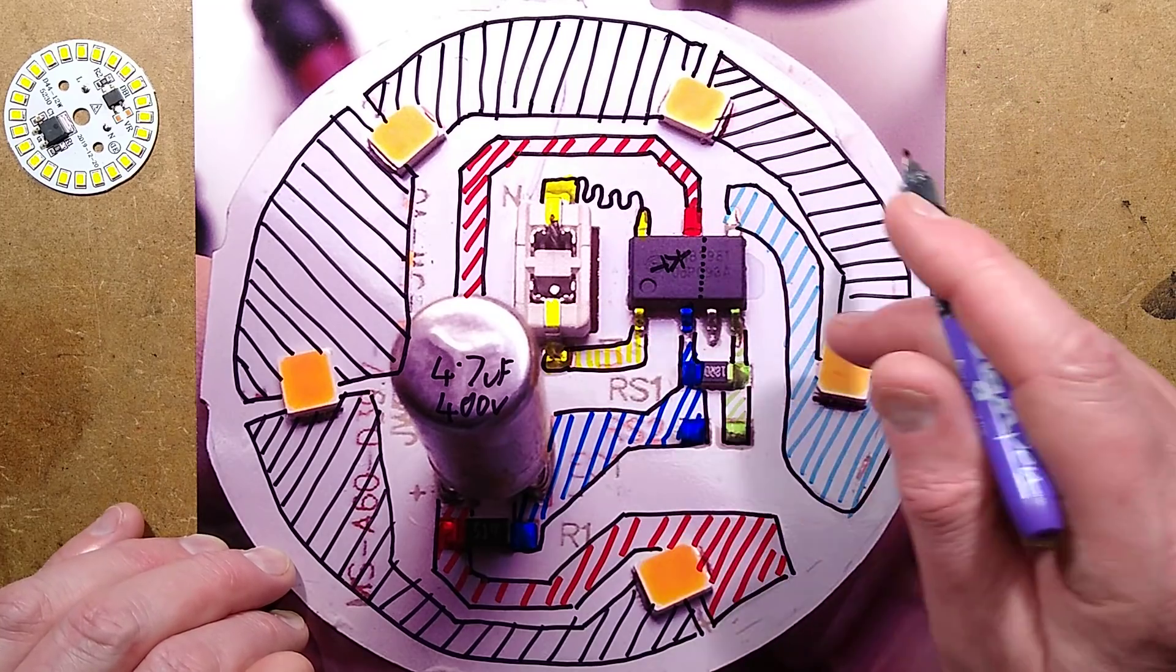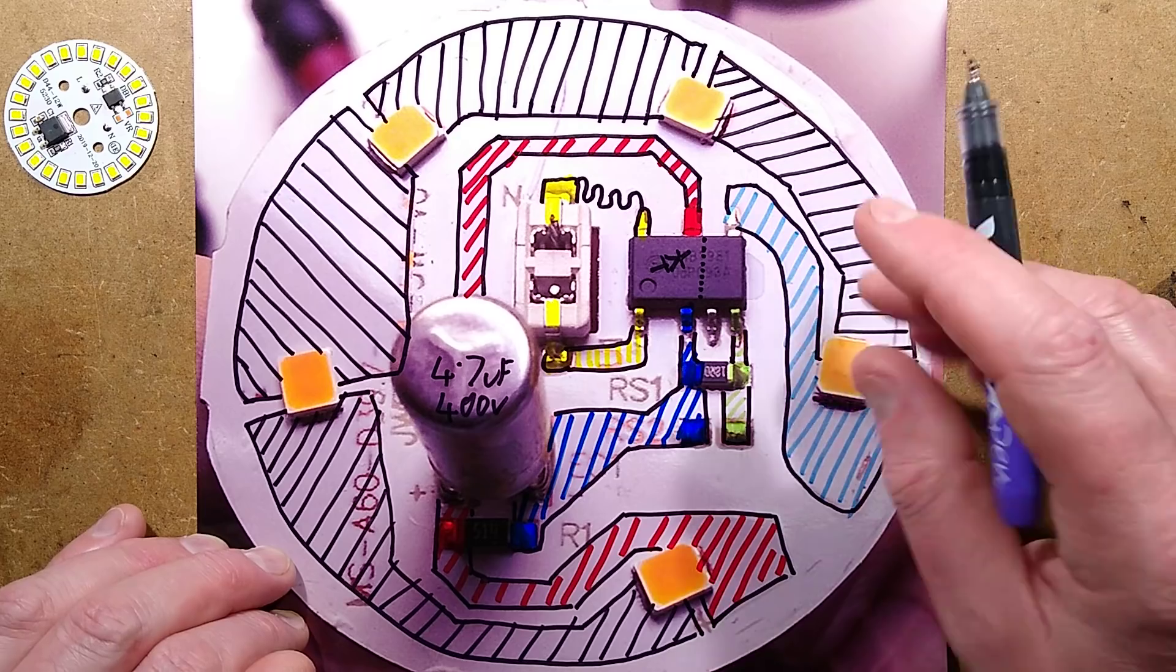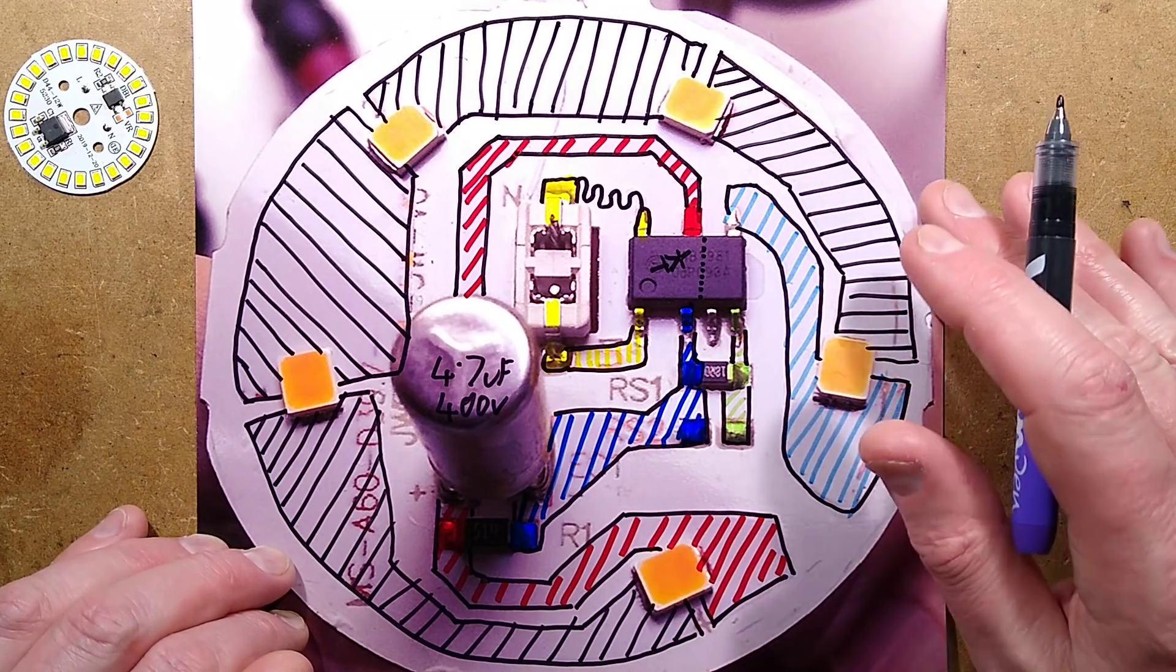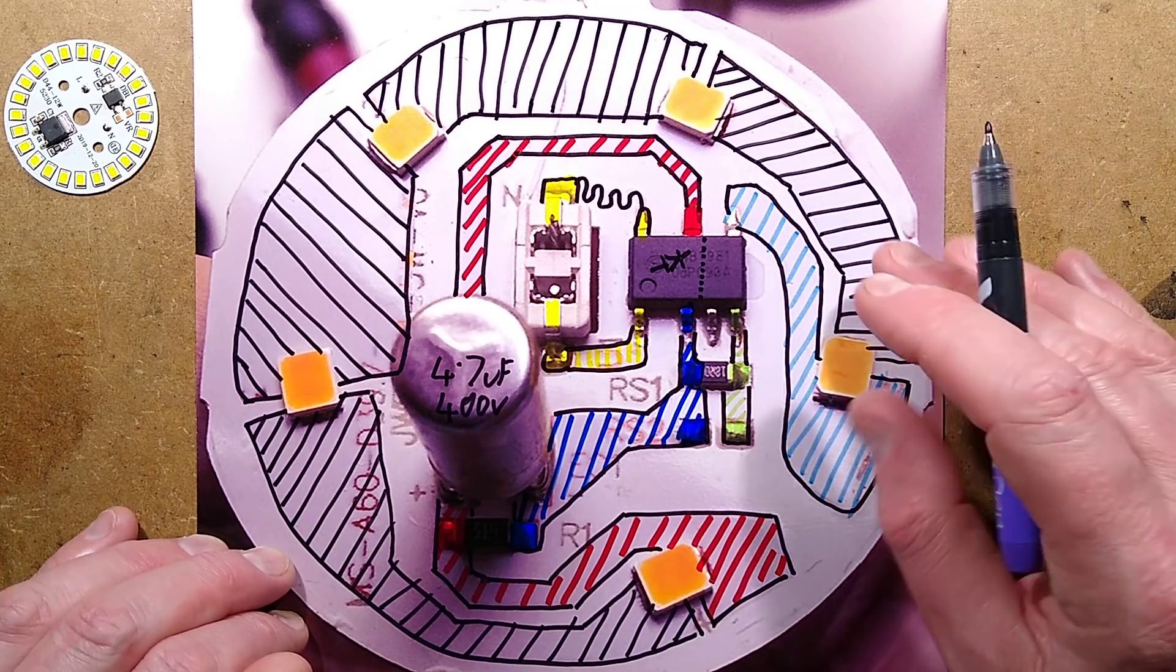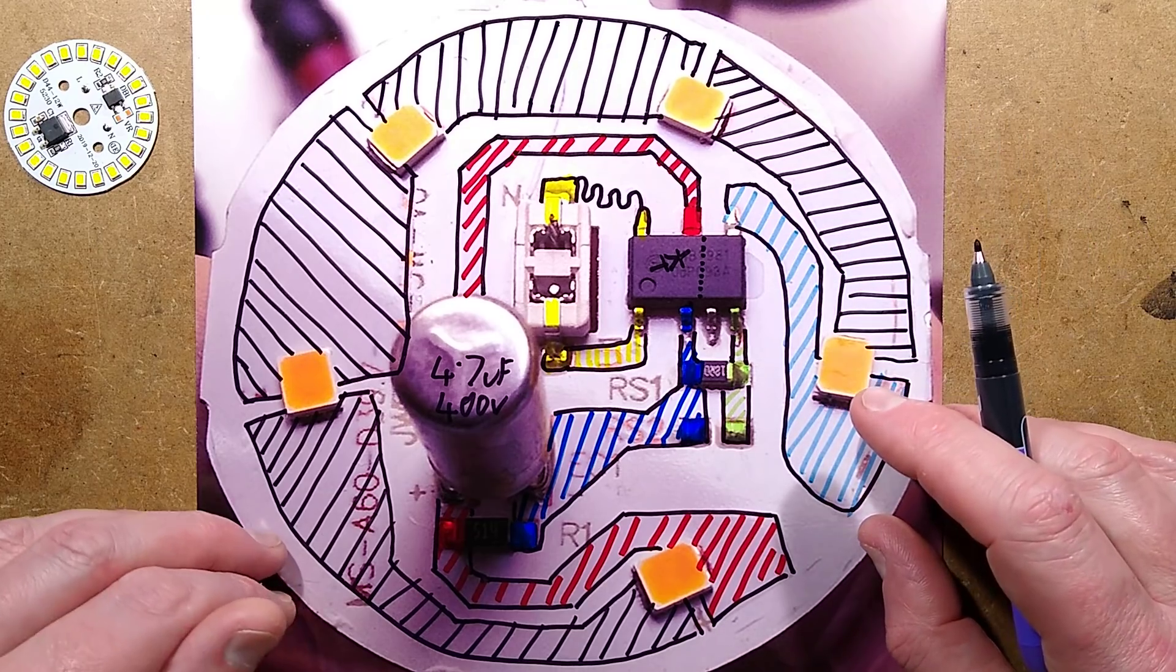If you were to go even easier and replace this as just a fixed resistor, then you'd find that as the mains voltage fluctuated, as things like loads came on, like heaters, the lights would flicker up and down in intensity.